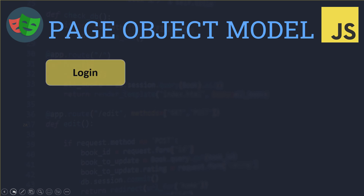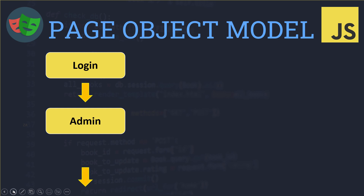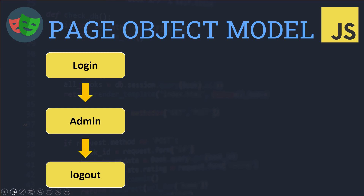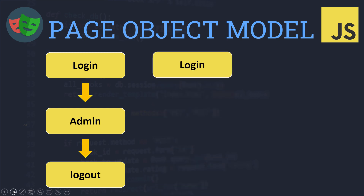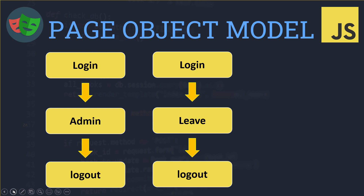Now let's see how things work if you don't use the Page Object Model. Basically you are logging into the application, going to the admin page, testing it, and then logging out. That's test one. In test two you log in again, go to the leave module, test it, and log out. If you are writing a hundred test cases this way, there are multiple problems — the first is code repeatability: login and logout are repeated across every test.